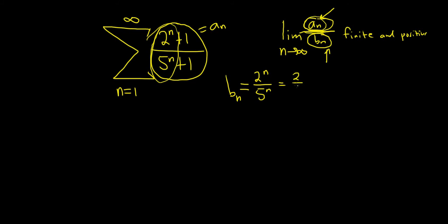This is really (2/5)^n as well. You can think of it that way. So now let's take the limit and verify that we can actually use limit comparison. We need to take this limit first and verify that it's finite and positive. So limit as n goes to infinity of a_n, which is 2^(n+1) over 5^(n+1).